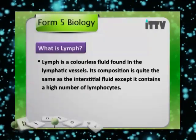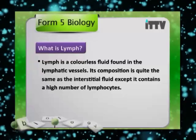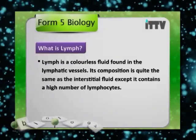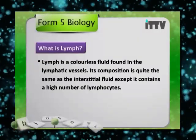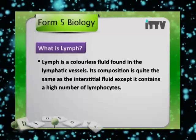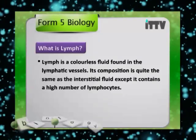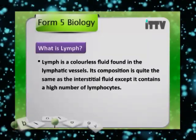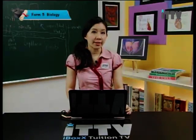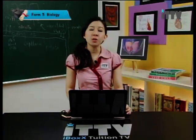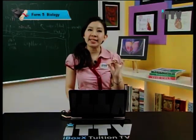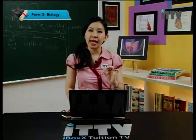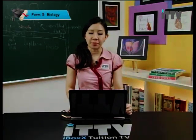So what is lymph? Lymph is the colourless fluid found in the lymphatic vessels. Its composition is quite the same as the interstitial fluid, except it contains a high number of lymphocytes — specifically certain immune cells, very important to protect and strengthen our immune system.